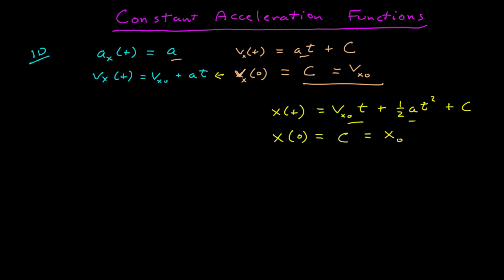There we have our final position as a function of time, which is the initial position plus the initial velocity times time plus one-half times the acceleration t squared. These are vector functions of time for the acceleration, velocity, and position. They tell you at each point in time what the acceleration, velocity, and position vectors are.